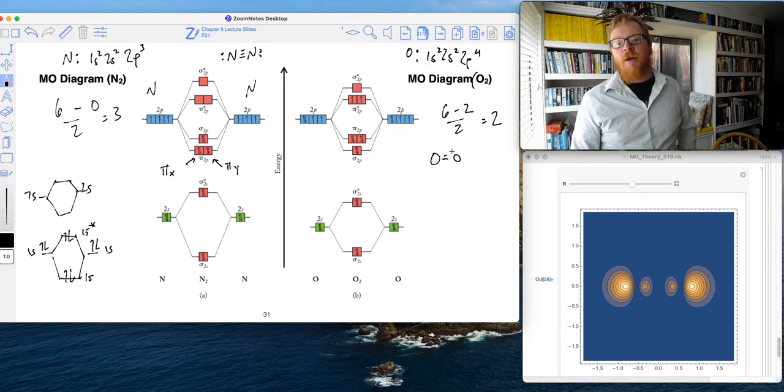Well, we remember the Lewis structure predicted a double bond. One of those is a sigma, and one of those is a pi. So what's going on with these, with this other? Like, you would think that there would be three bonds from this discussion.